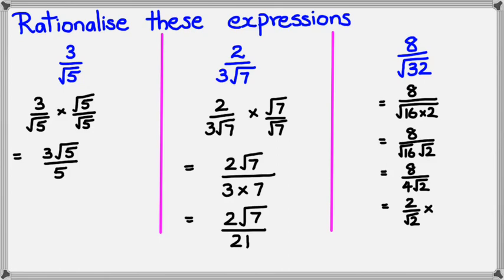So this step here, I multiply the numerator by square root of 2, the denominator by square root of 2, and I end up with 2 times root 2 divided by 2, which in fact simplifies to just simply square root of 2.